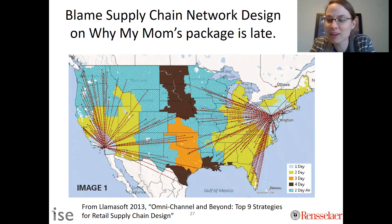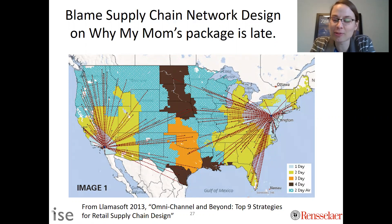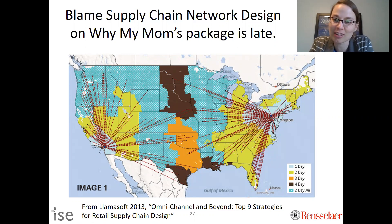This is a company that only has two distribution centers. You can see in the light blue they're able to use one-day ground to reach those people. In green, two-day ground. In orange, three-day ground. And in brown, four-day ground.